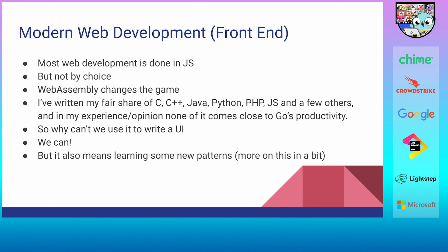WebAssembly changes the whole game because we can take code written in a number of different programming languages — Go definitely being one of them — and compile them to a binary file that runs in your browser. I've written my fair share of code in C, C++, Java, and PHP, and when I moved to writing code in Go, my observation is it's just much more productive. That's the combined effect of all the smaller individual decisions that went into making Go what it is — the standard library, the runtime, all of its features.